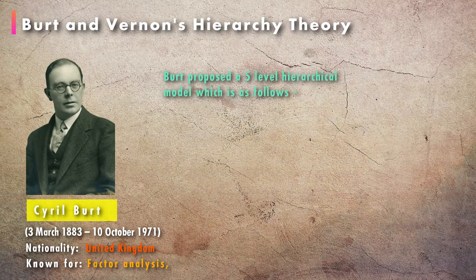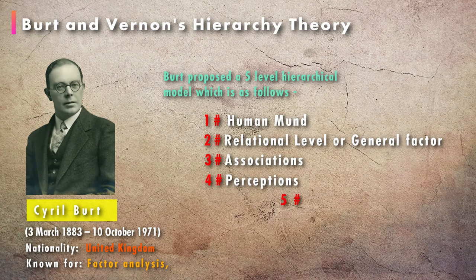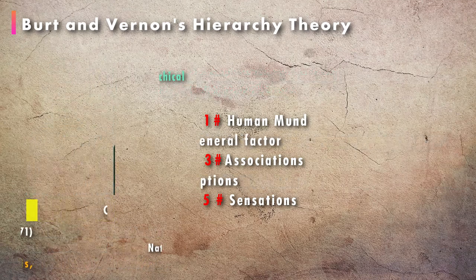Barth proposed a five-level hierarchical model which is as follows: human mind, relation level or general factor, associations, perceptions, and sensations.